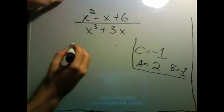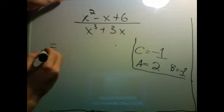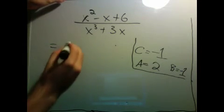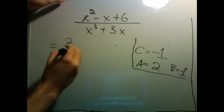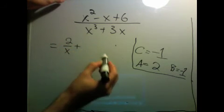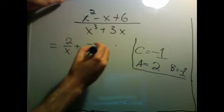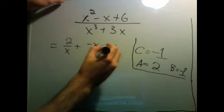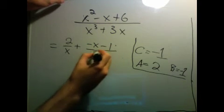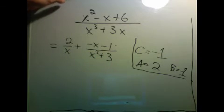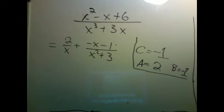So the thing we started with is equal to 2 over x plus negative x minus 1 over x squared plus 3. Now the question is, how do we integrate this?